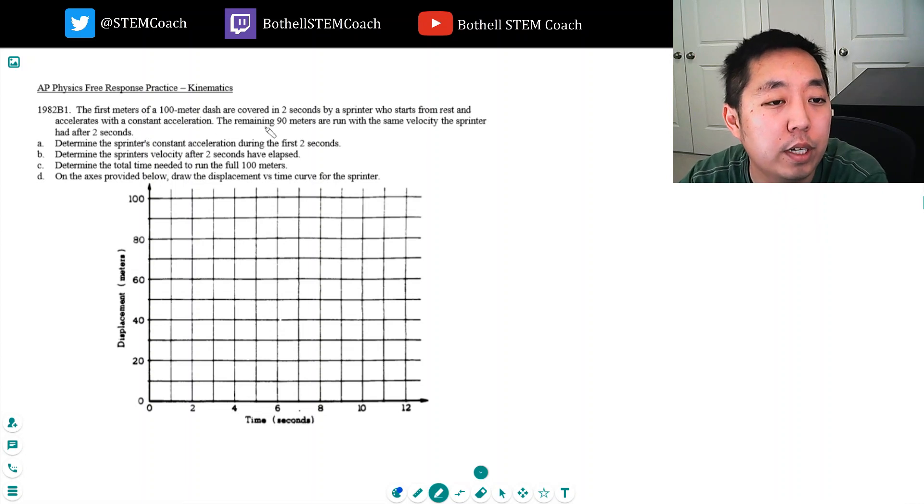The first meters of a 100-meter dash are covered in two seconds by a sprinter who starts from rest and accelerates with constant acceleration. The remaining 90 meters are run with the same velocity the sprinter had after two seconds.